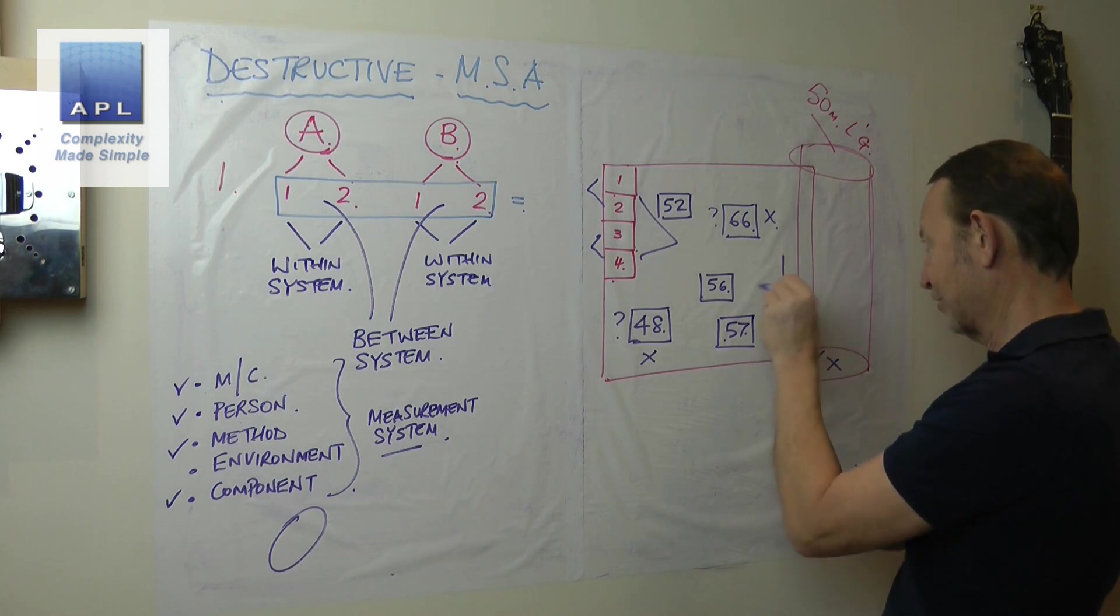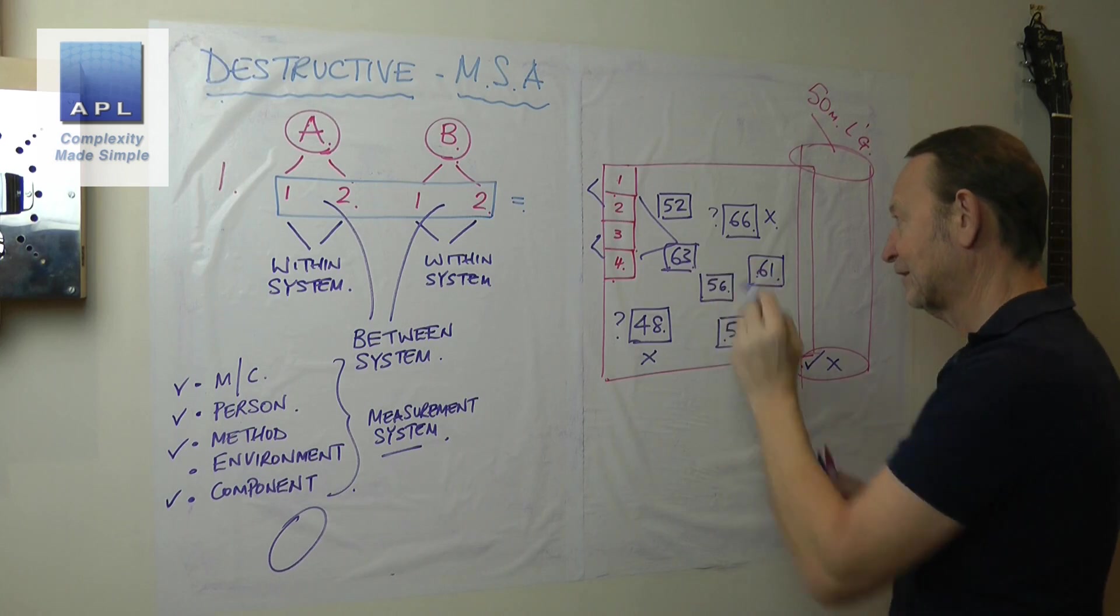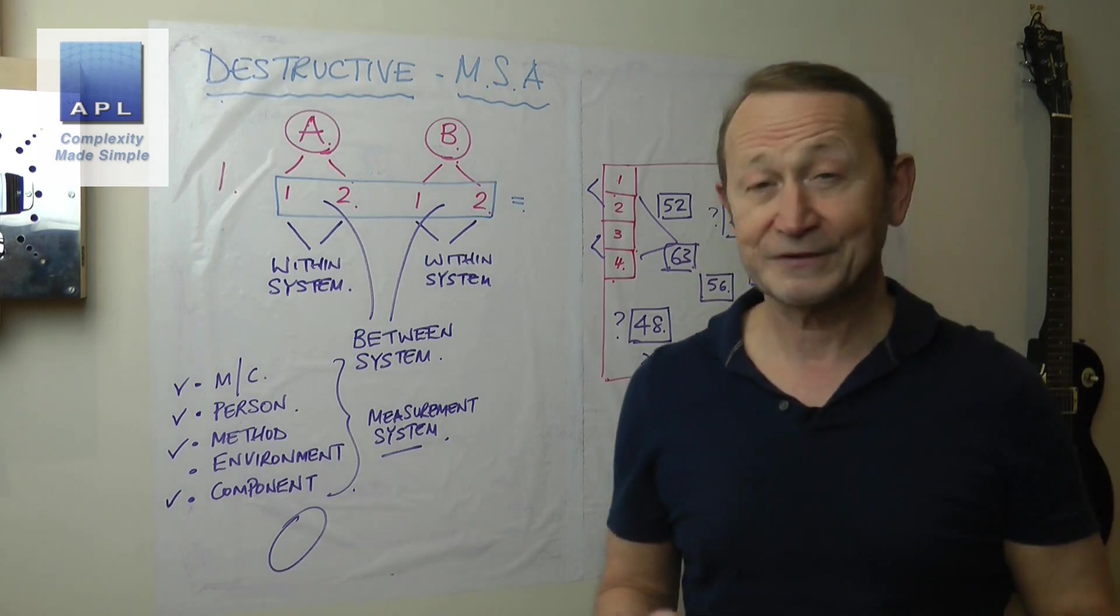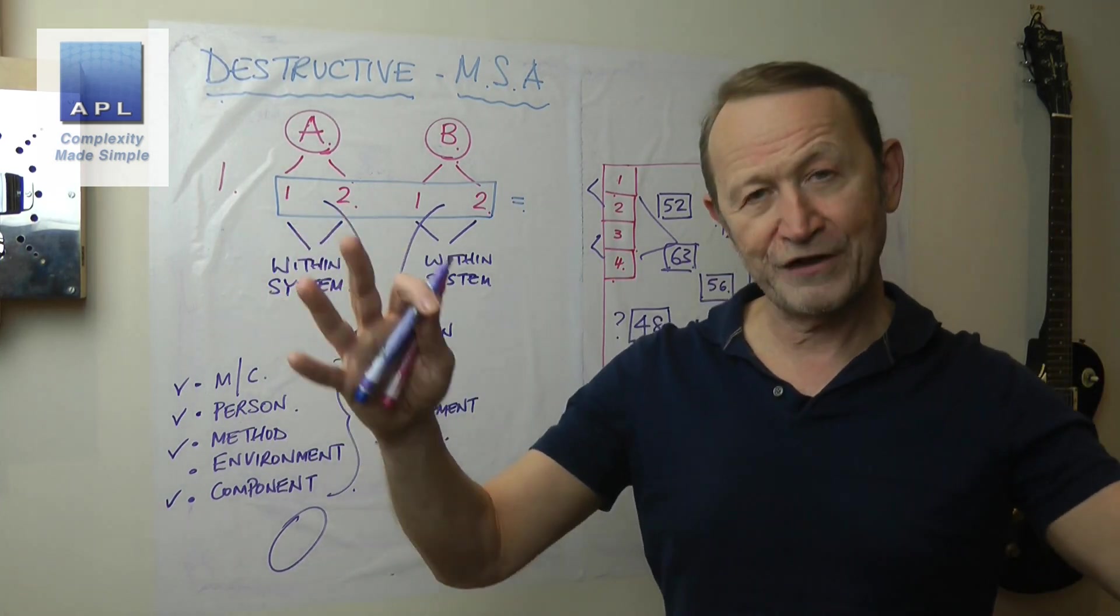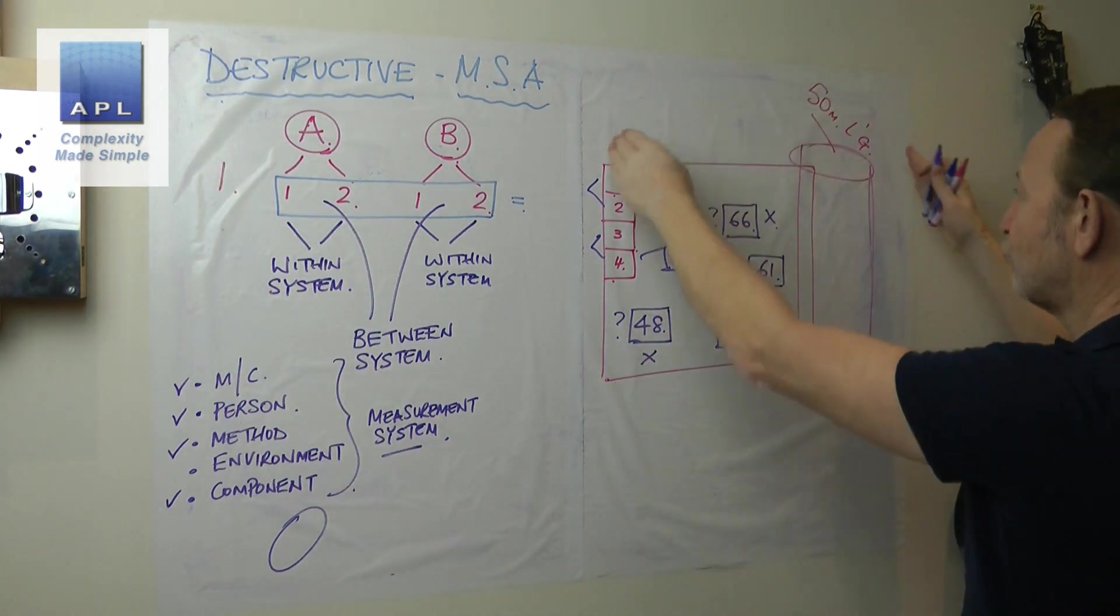I measure it five times and I take the average. So what can you do here if you want to lose some of this within material variability? You can measure it multiple times and take the average.